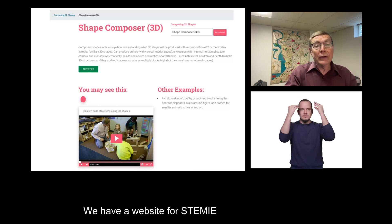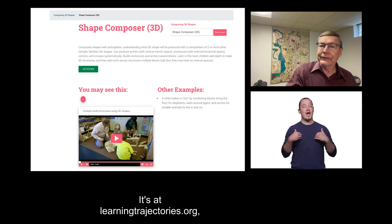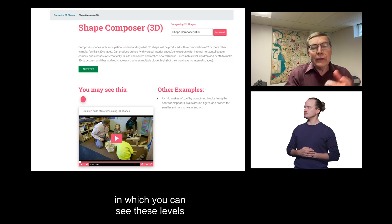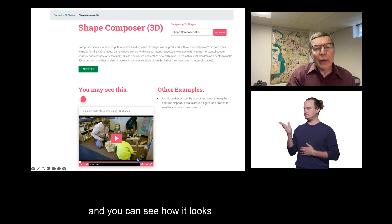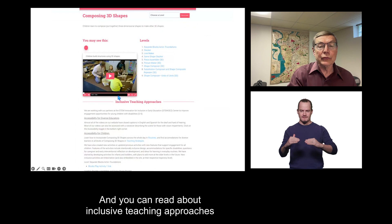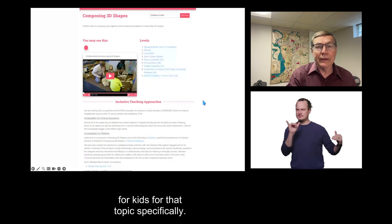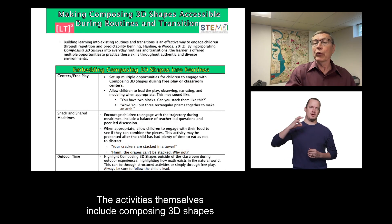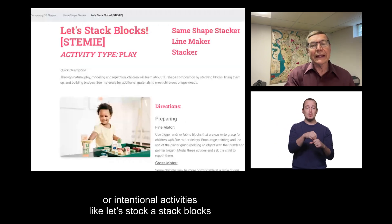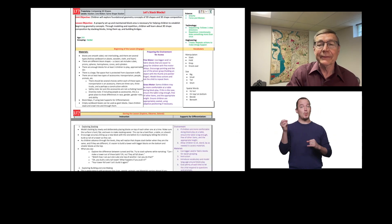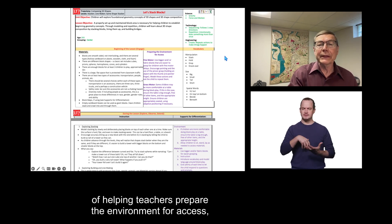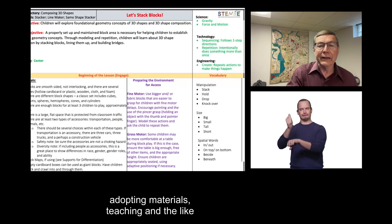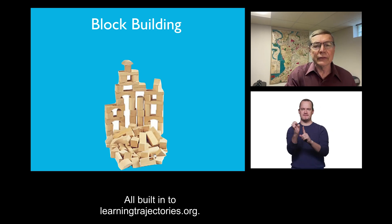We have a website for STEMI called Learning and Teaching with Learning Trajectories. It's at learningtrajectories.org. Just one compound word, learningtrajectories.org, in which you can see these levels, and you can see how it looks when kids are at various levels. And you can read about inclusive teaching approaches for kids for that topic specifically. So, those are really helpful. The activities themselves include composing 3D shapes during routines and transitions, or intentional activities like let's stack blocks. And there's all kinds of helping teachers prepare the environment for access, adopting materials, teaching, and the like, and the environment for better access. All built in to learningtrajectories.org.